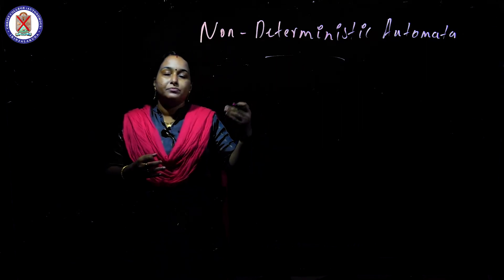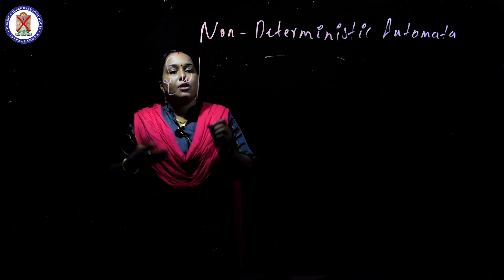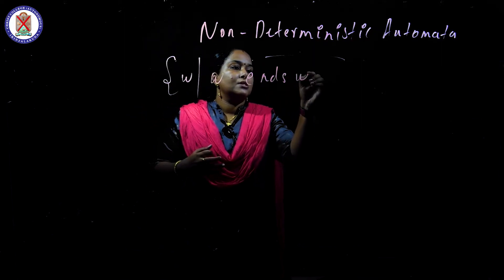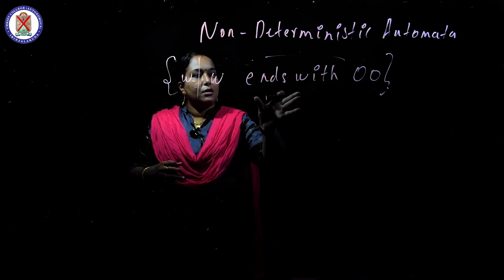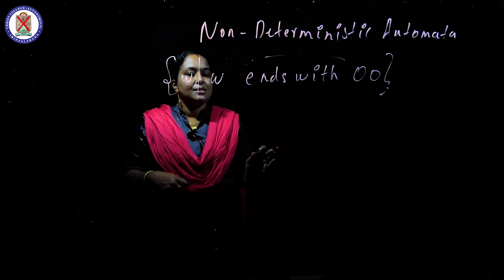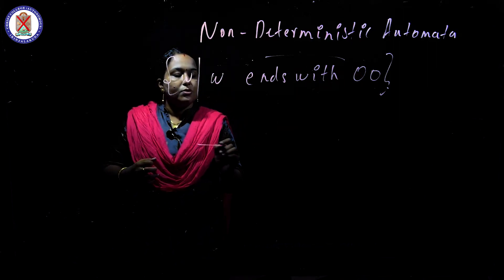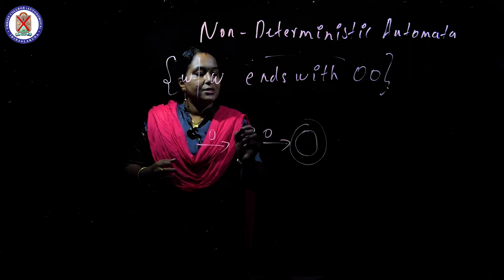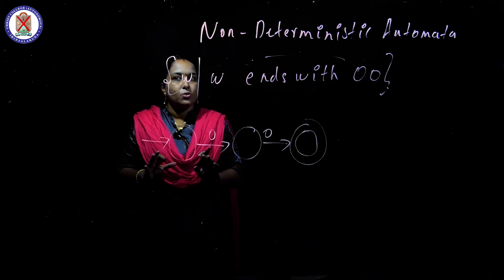We will look into the details through examples. The first example is W such that W ends with zero zero - the same example we used in deterministic finite automata. Now I am going to construct a non-deterministic automata. The logic is simple: two arrows with zeros, the last arrow leads to the stop state, intermediate arrows to intermediate states, and the first state is the start state.